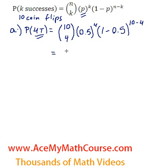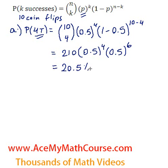10 choose 4 is 210. 1 minus 0.5 is 0.5, 10 minus 4 is 6. If we just work this out, we're going to have 20.5% or 0.205, which is equivalent to 20.5%.